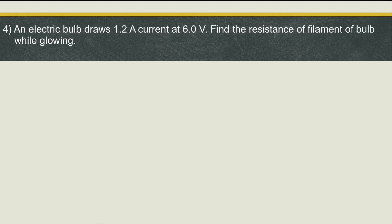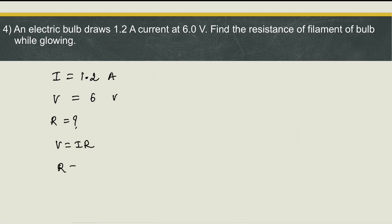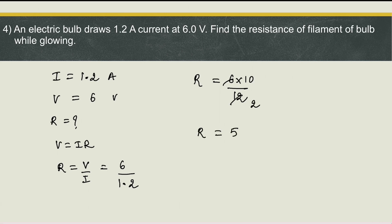Next: an electric bulb draws 1.2 ampere current at 6 volt. Find the resistance of the filament while glowing. Current is 1.2 ampere (already in SI units, no conversion needed) and potential difference is 6 volt. Using Ohm's law, R = V/I = 6/1.2. Simplifying: 6 × 10/12 = 60/12 = 5. So resistance is 5 ohm.